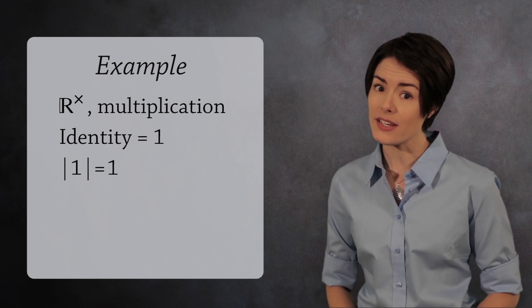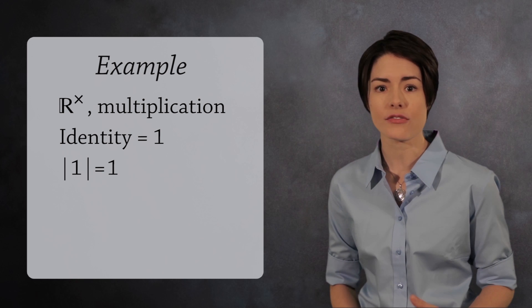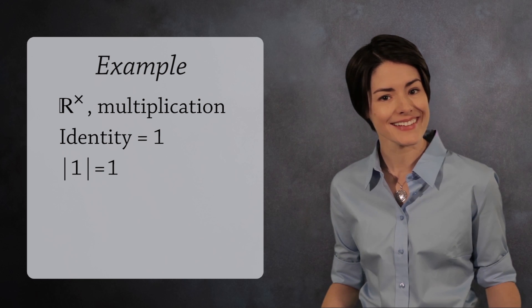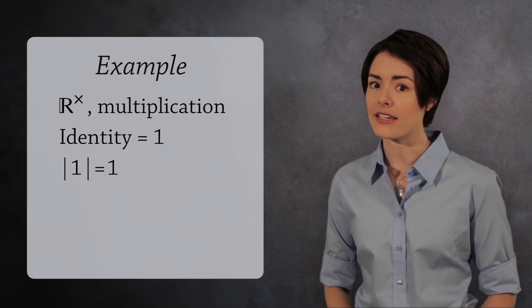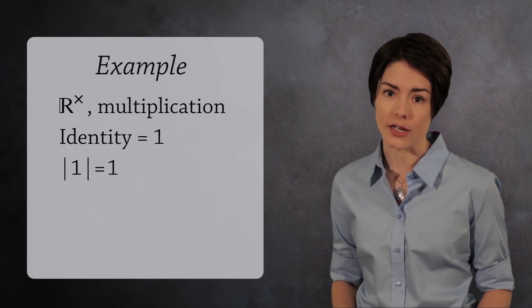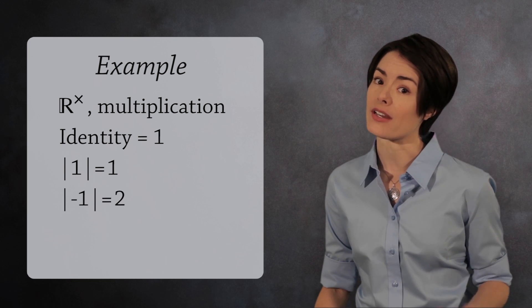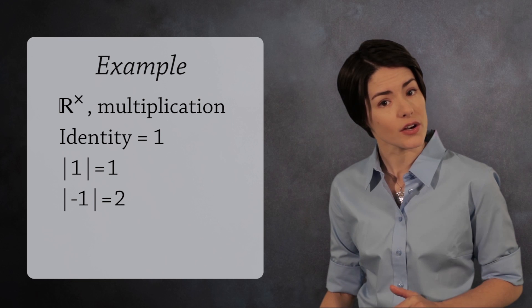Incidentally, the order of 1 is just 1 because 1 to the first power is still 1. In fact, the order of the identity element in any group is 1. The order of negative 1 is 2 because negative 1 squared is 1.